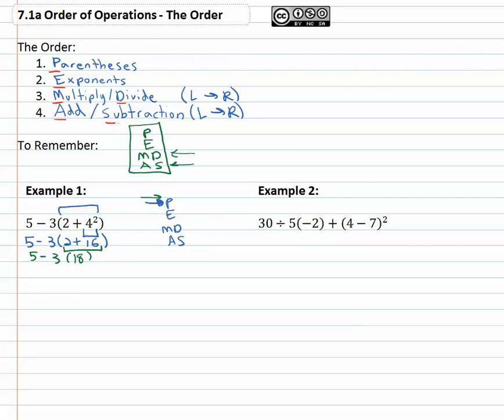Now that the parentheses are done we can continue working down, there's no exponents, so next we will do any multiplying and dividing. The 3 being right next to the 18 means 3 times 18, so that has to be done next, 5 minus 54. Finally, we can finish by doing any adding or subtracting that might be in the problem, 5 minus 54 gives us our final answer of negative 49.